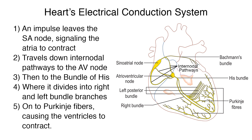In a normal heartbeat, an impulse leaves the SA node, the heart's natural pacemaker, signaling the atria to contract. It travels down the internodal pathways to the AV node.